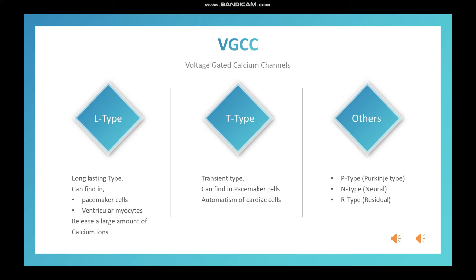To summarize: L-type channels are found in pacemaker cells and ventricular myocytes, mainly responsible for large calcium influx. T-type (transient) is found in pacemaker cells only. Two important terms: influx means ions coming inside the cell — when a VGCC opens and calcium ions come in, that's influx. Efflux is when something is going outside the cell.